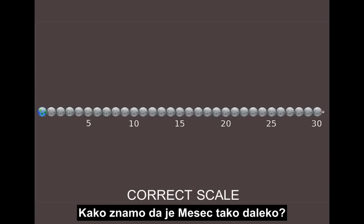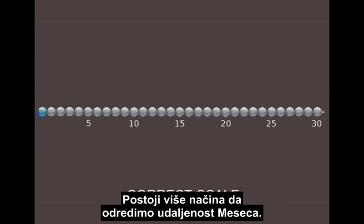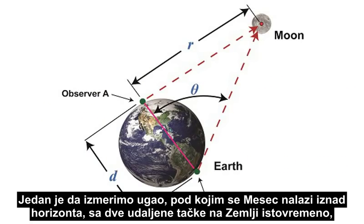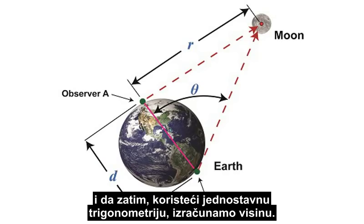How do we know it's that far away? There are a number of ways to determine the distance to the Moon. One way is by measuring the Moon's angle above the horizon simultaneously from two distant points on Earth, and then using simple trigonometry to calculate the height.